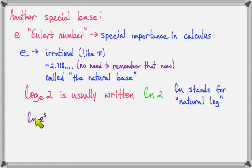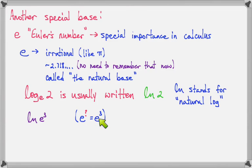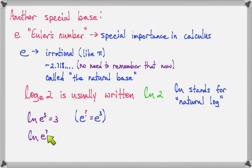So LN of E to the third just means log base E of E to the third. In other words, what exponent changes E into E to the third? The natural log of E to the third is 3. And here's another one: the natural log of E to the seventh. In other words, what exponent changes E into E to the seventh? It would have to be 7. So the natural log of E to the seventh is 7.